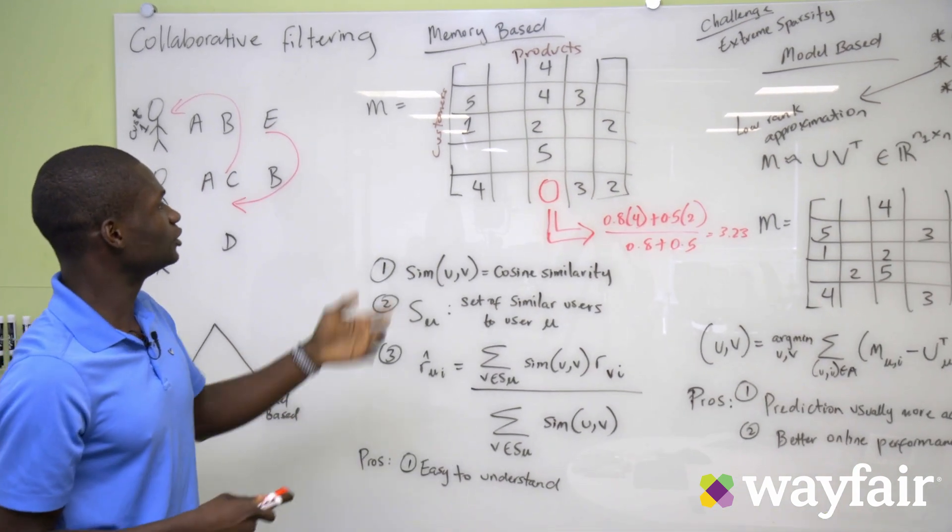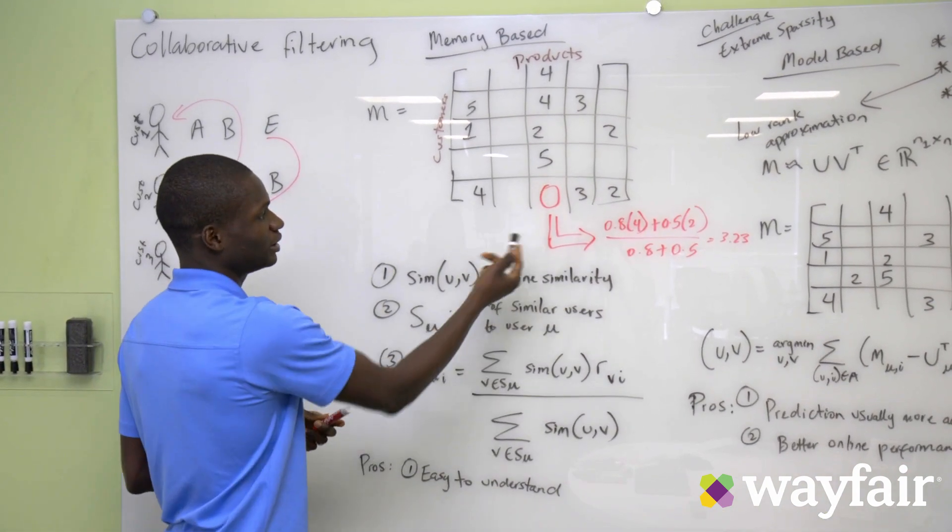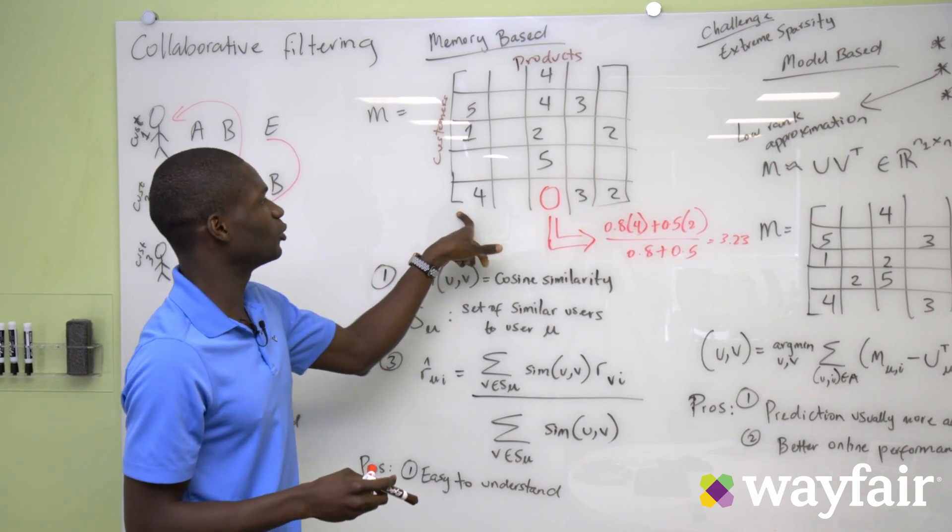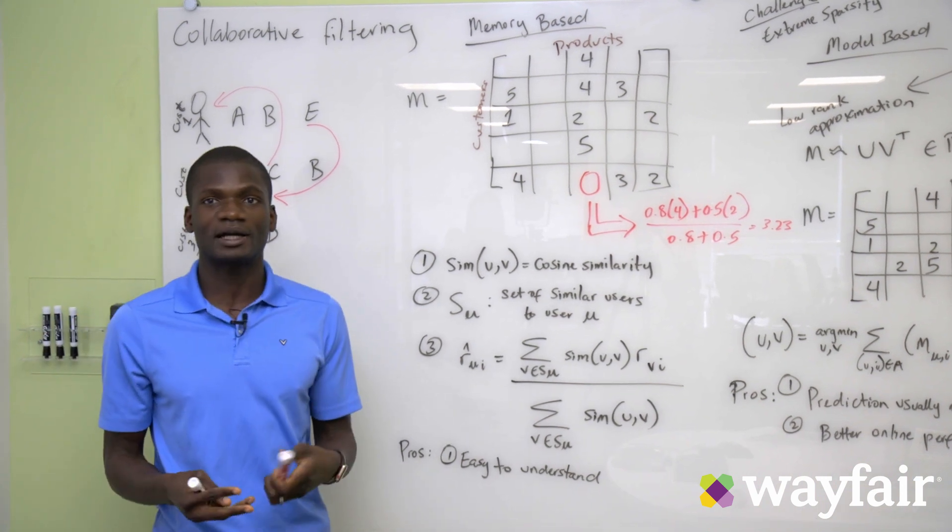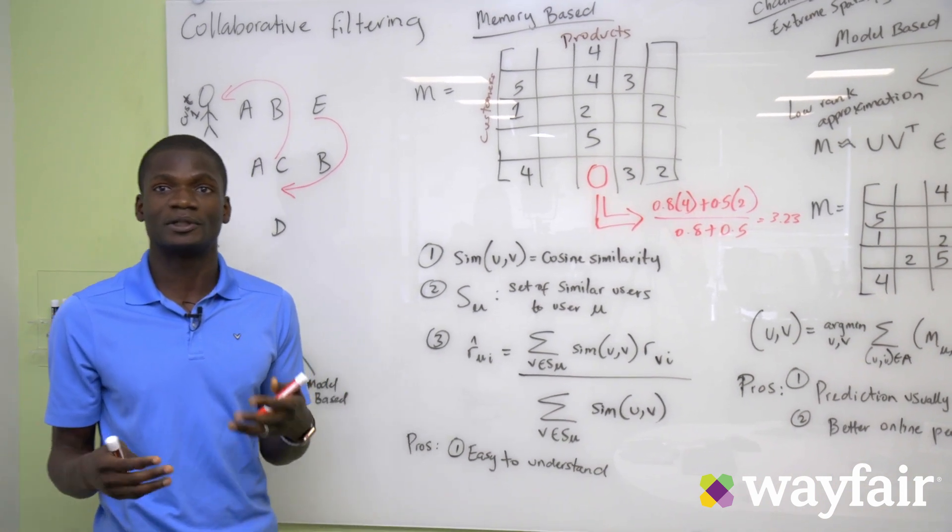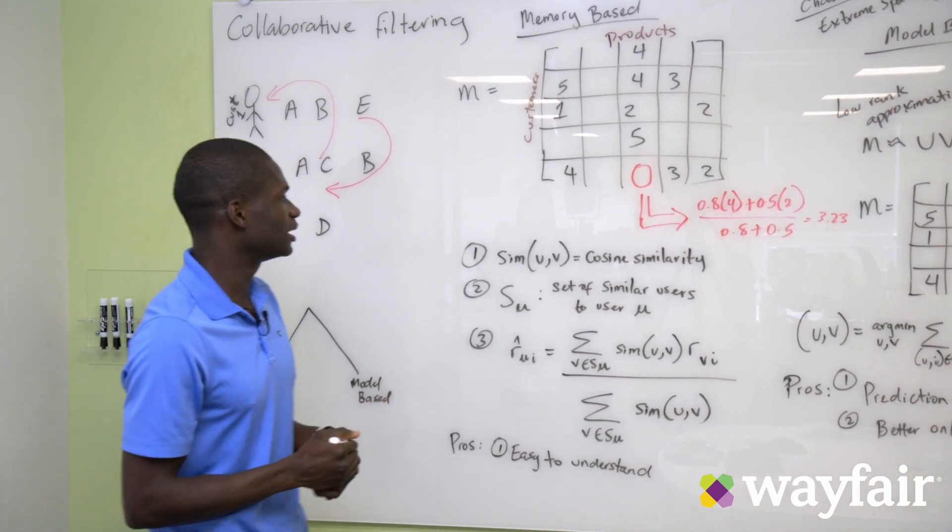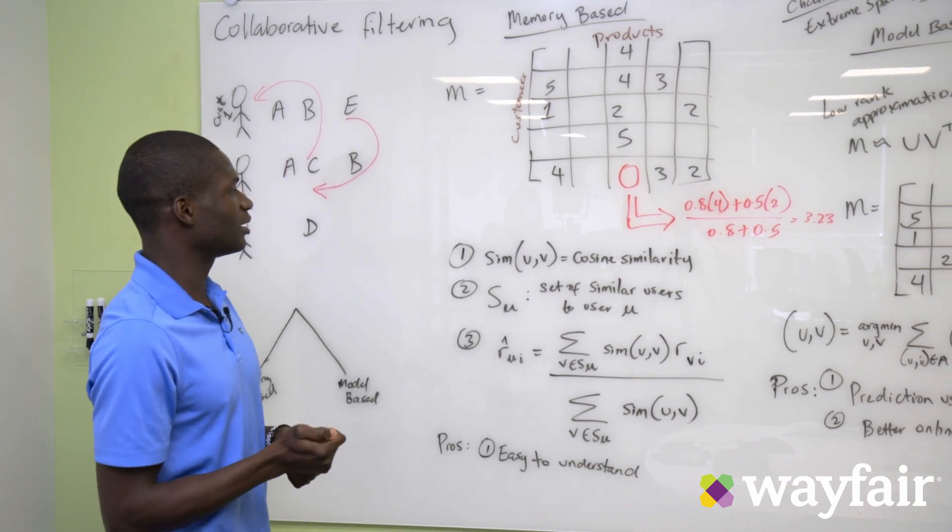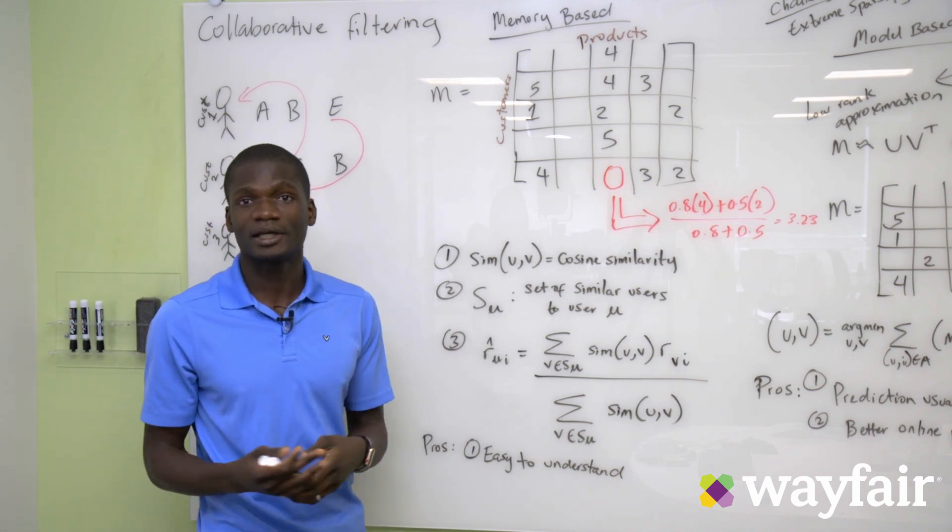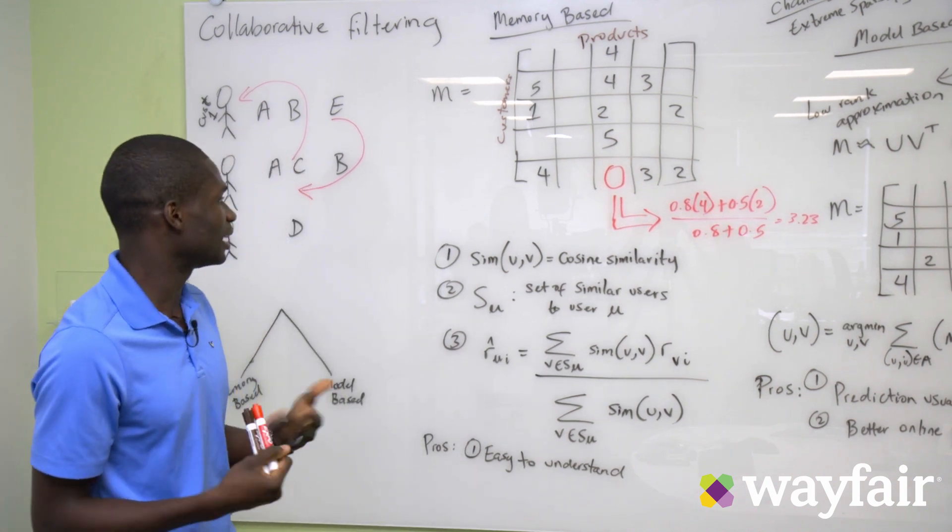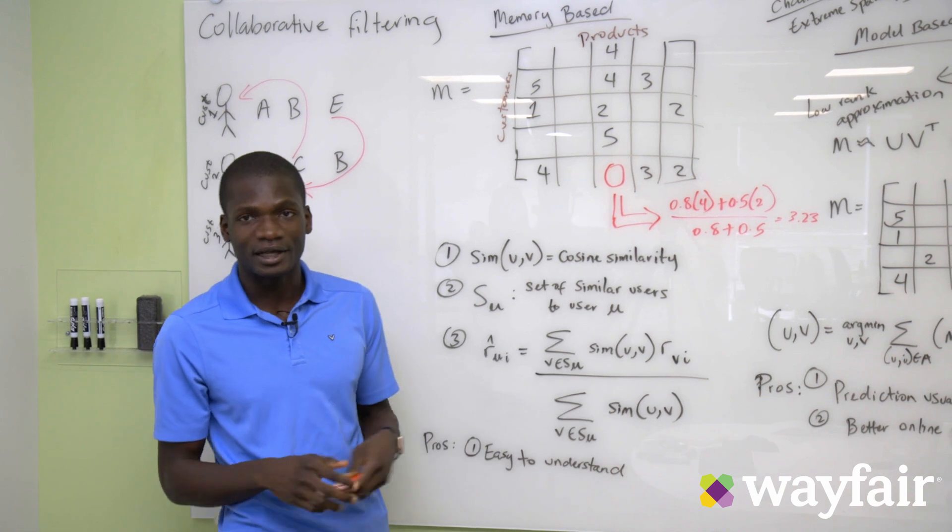And if we want to make a prediction about what this customer would rate this product, the first step that we do is we need to define some kind of similarity measure between customers. So we could say all the customers in this matrix are similar by some kind of metric and the one popular metric that's commonly used is cosine similarity.